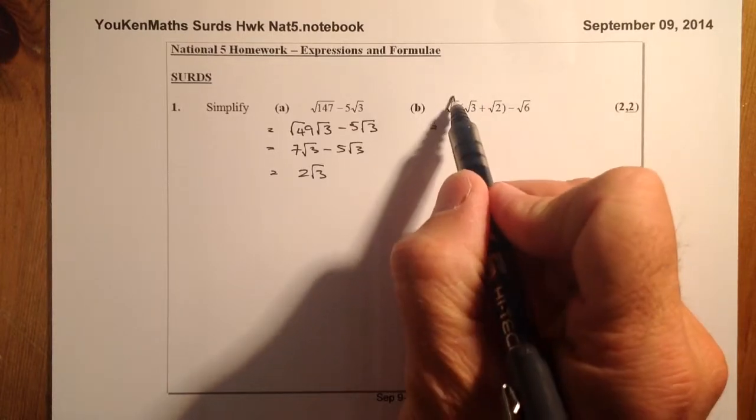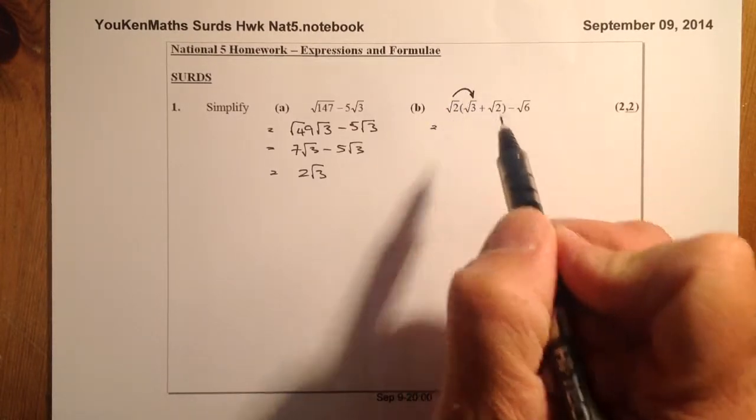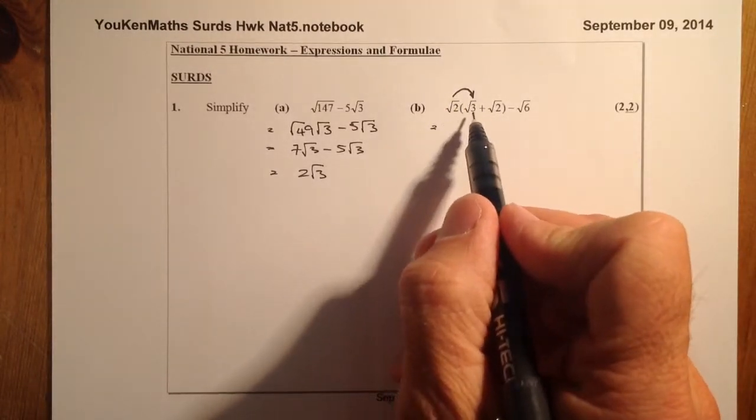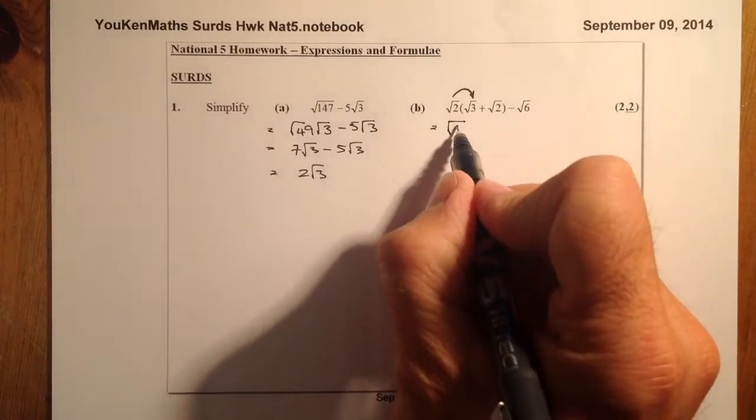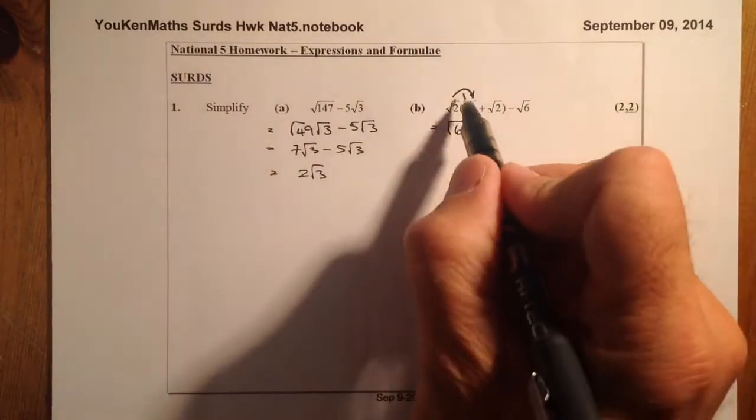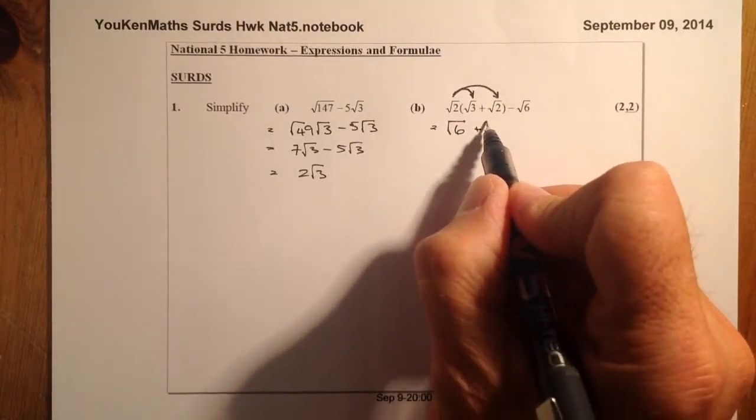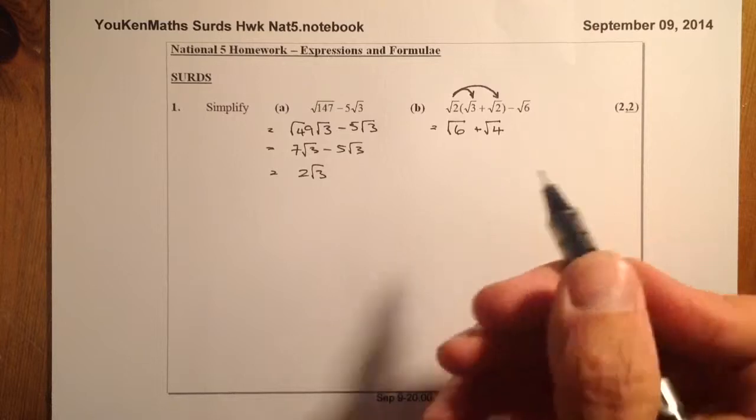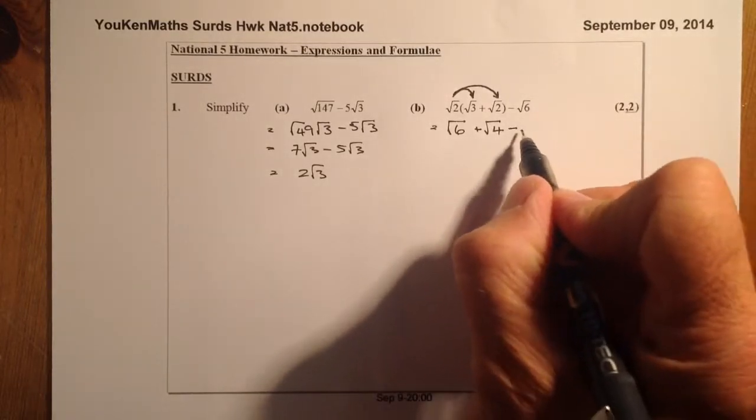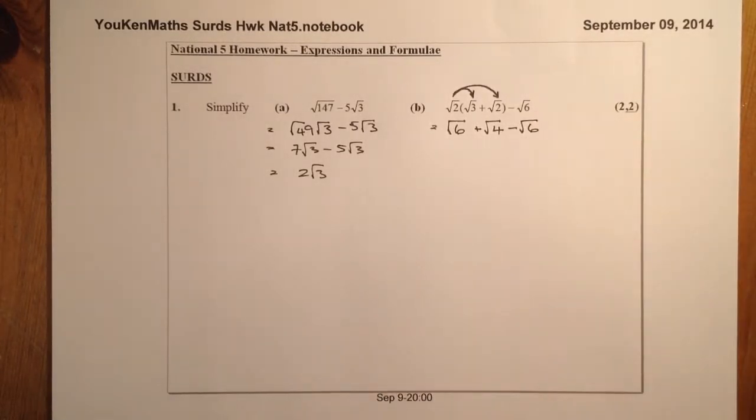So multiplying surds, the first thing I'm going to multiply out are these two guys here. So I've got root 2 times root 3, so that should give me root 6. I'm then going to multiply root 2 times root 2, which should give me plus root 4. So that's a bracket multiplied out. And then I've got the subtracting the root 6 on at the end there.